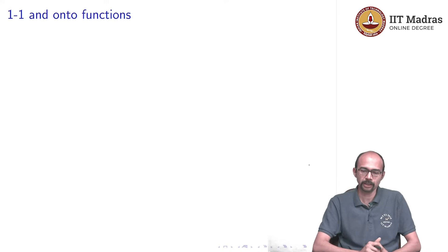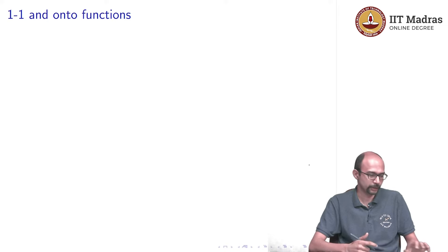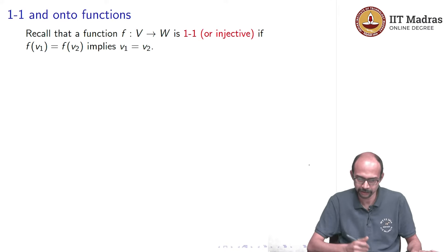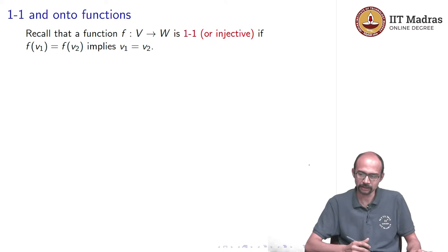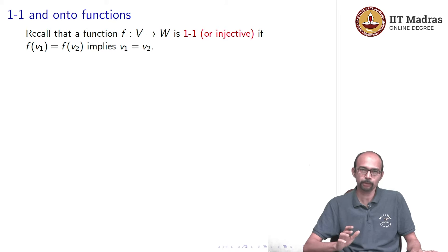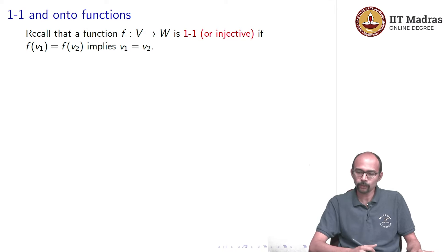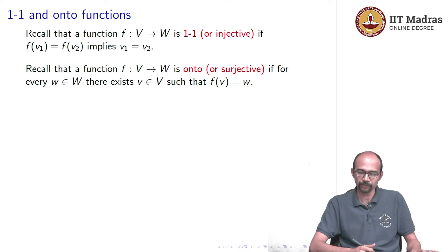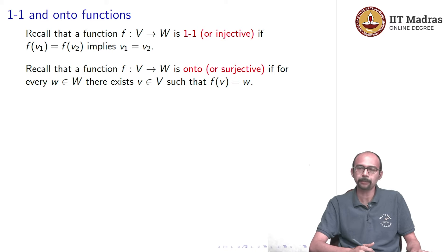Let us recall what is a one-to-one function and what is an onto function — possibly you have seen this in Maths 1. A function f from V to W (where V and W can be any sets) is called one-to-one or injective if f(v1) = f(v2) implies v1 = v2. It is called onto or surjective if for any w in W, there exists a v in V such that f(v) = w.